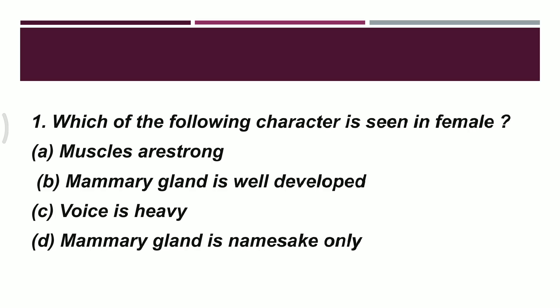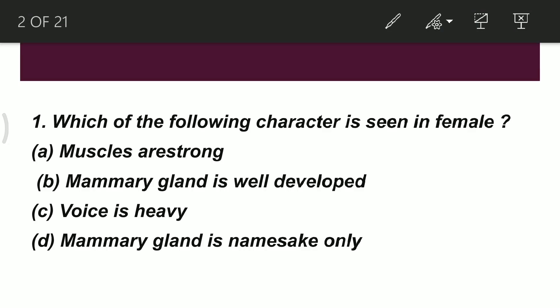The first question is: which of the following characters is seen in adult females? Option A: muscles are strong. Option B: mammary gland is well developed. Option C: voice is heavy. Option D: mammary gland and namesake only. The correct option is B, because in adult females the mammary gland generally gets well developed.